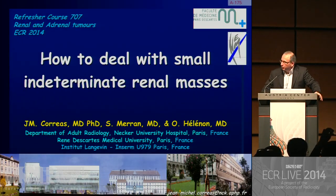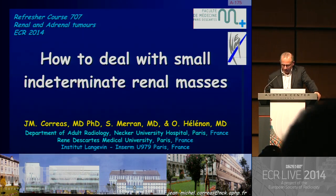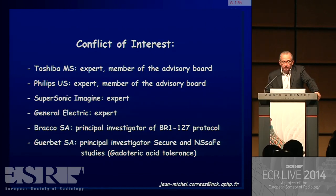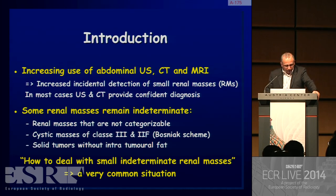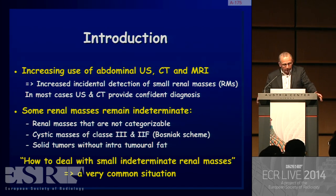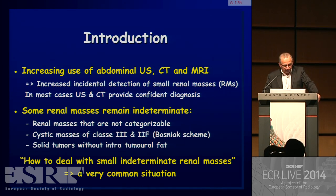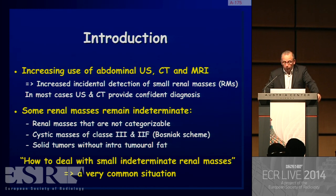Ladies and gentlemen, it's my pleasure to conclude this session with a very common problem dealing with indeterminate renal masses. The content covers the traditional increased use of abdominal ultrasound, CT, and MRI techniques leading to increased incidental detection of small renal masses. In most cases, ultrasound and CT provide confident diagnosis, but MRI can play a key role. However, some renal masses remain indeterminate — those that cannot be categorized — including cystic masses of Bosniak classes 3 and 2F, and solid tumors without intratumoral fat.